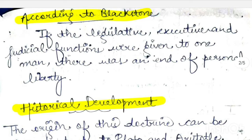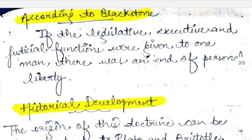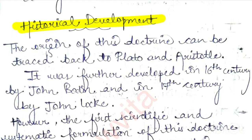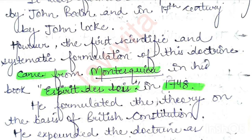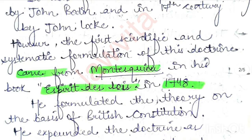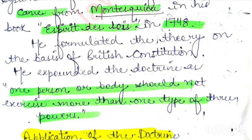In this definition, Blackstone is indicating that there should be a system of separation of power where all powers are separate, independent, and no one should interfere in others' territory. In terms of how this principle developed — it originated with Plato and Aristotle. In the 16th century, John Bodin and further in the 17th century, John Locke developed this doctrine of separation of power.